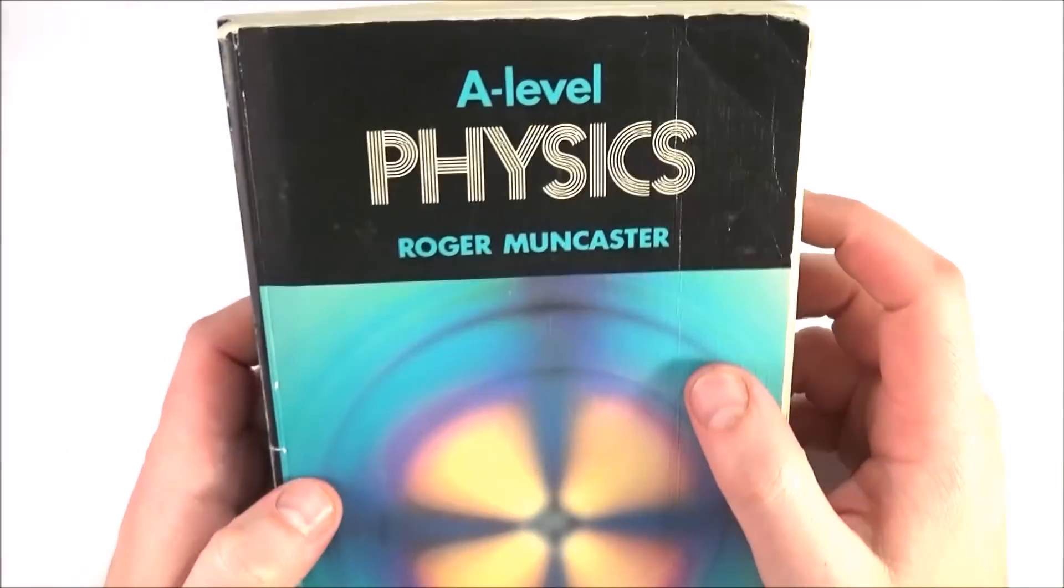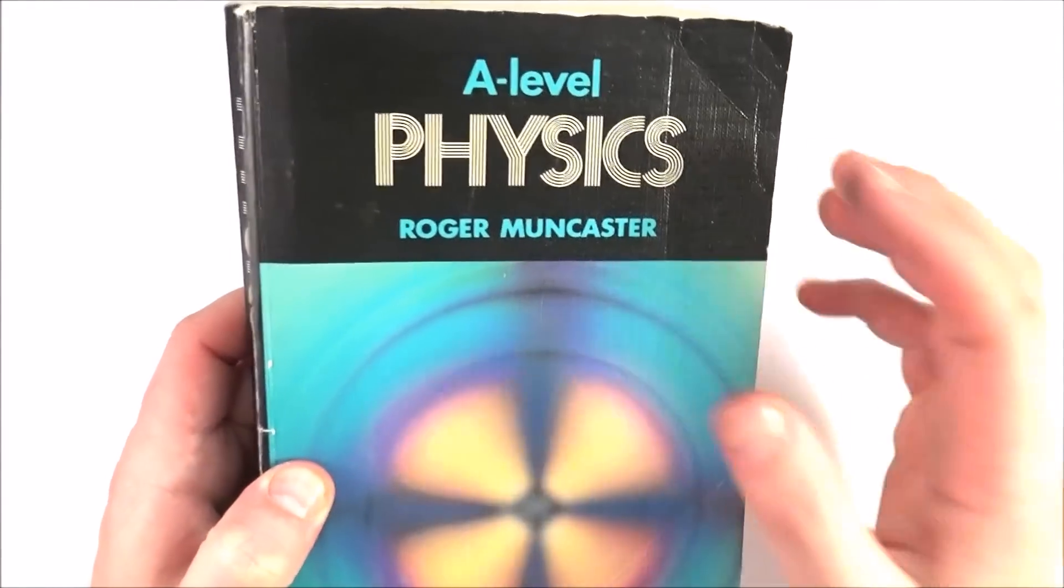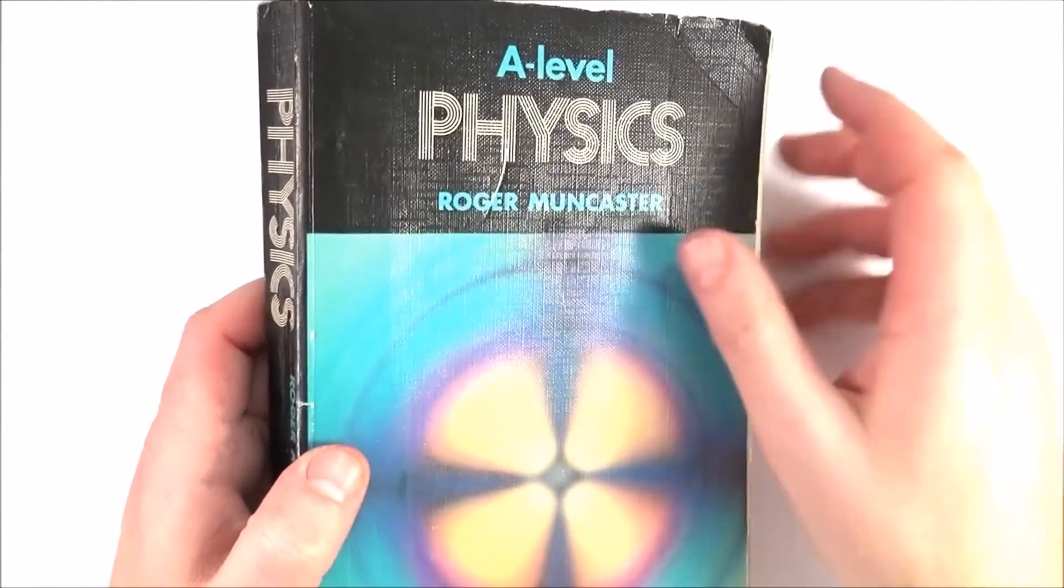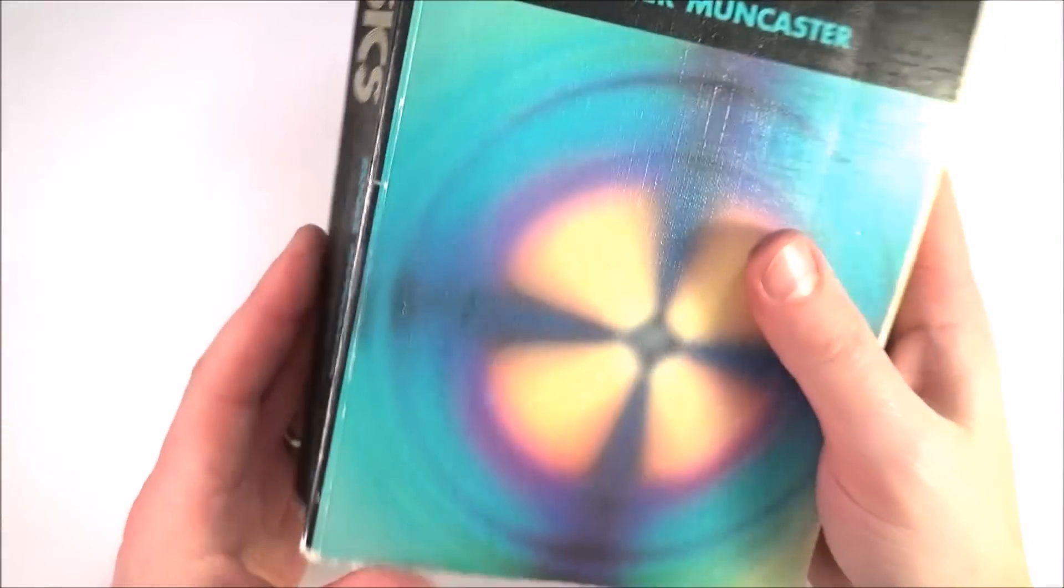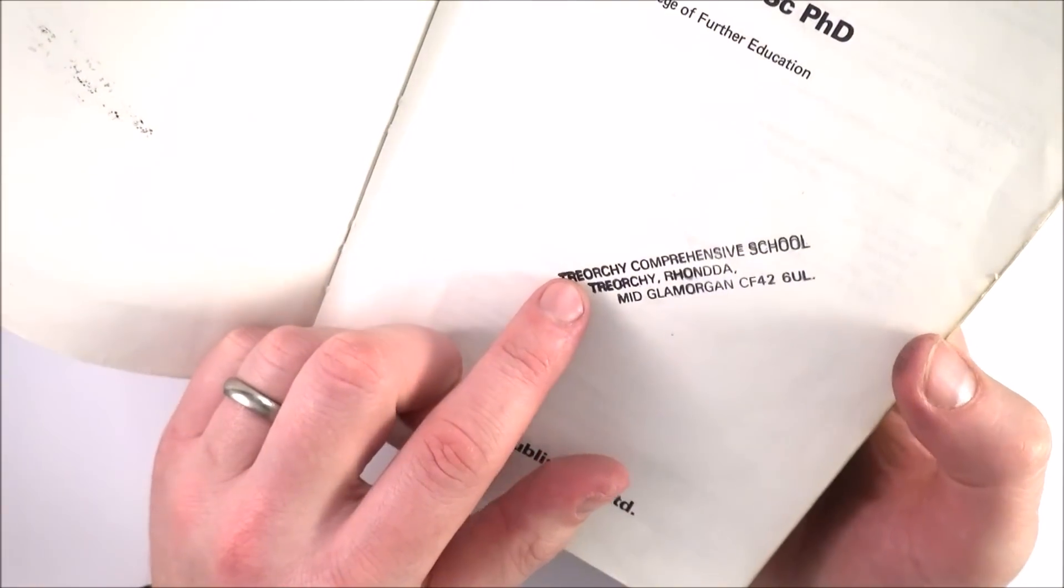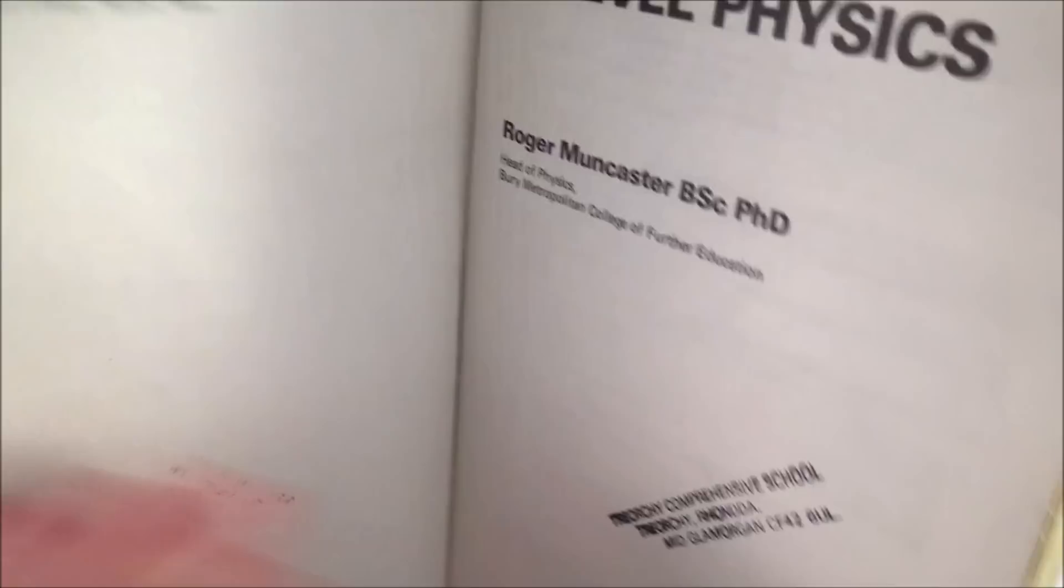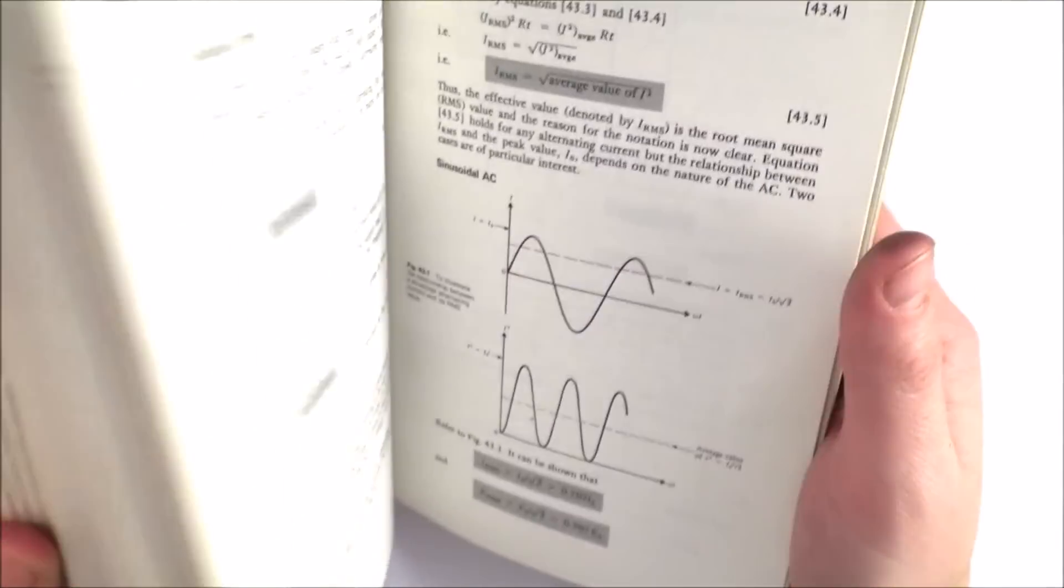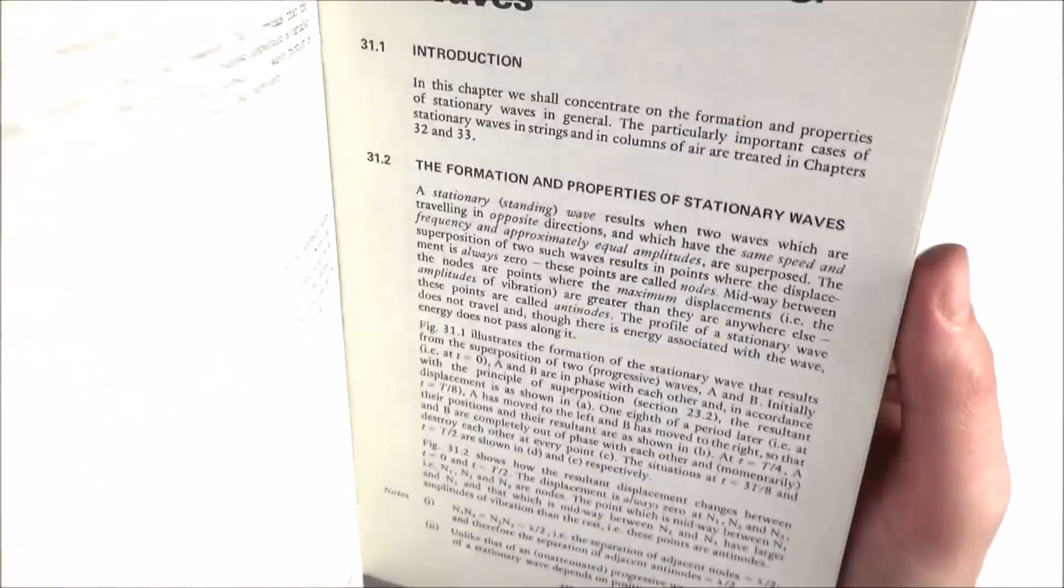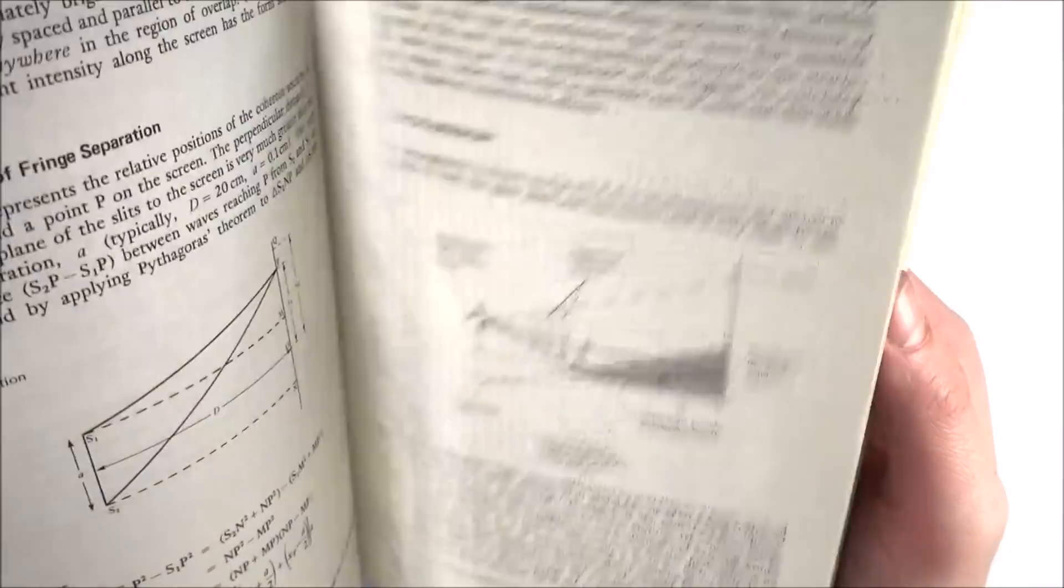But really this book here is my favorite: A-level Physics by Roger Muncaster. If any teachers are watching this I'm sure you'll probably comment below that you've found this book incredibly useful as well. I actually stole it from my last school, it was on the shelf, and they actually stole it from another school in Wales at some point in the past. This book here is pretty old, there's basically no color inside it, no photographs, it's just pure physics.